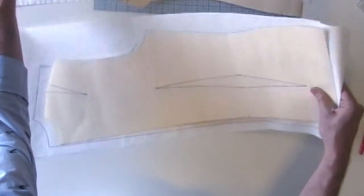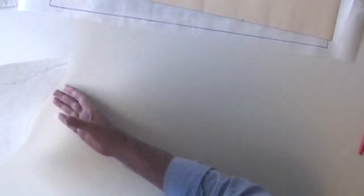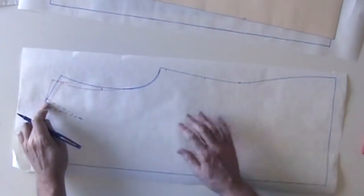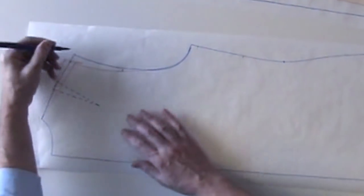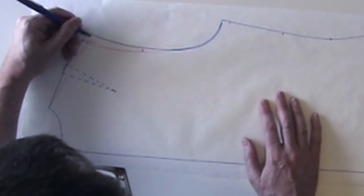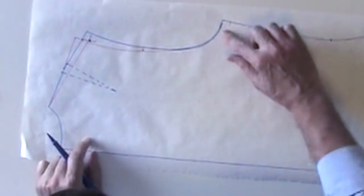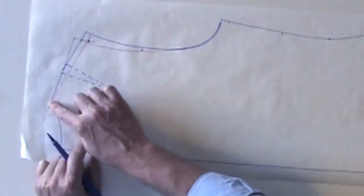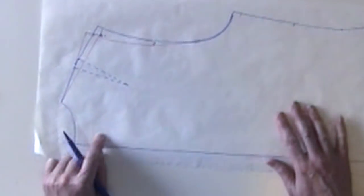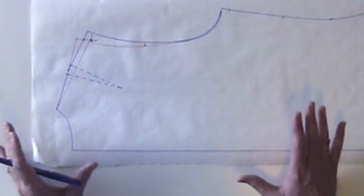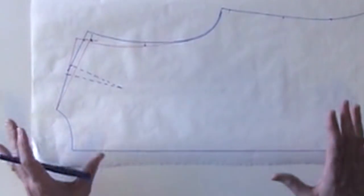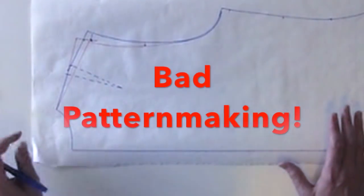If you have seen someone demonstrate removing a shoulder dart by coming in here at the side, the width of the dart, and then blending the armhole and angling the shoulder seam, do not do this. It's bad. Bad pattern making. And here's why.